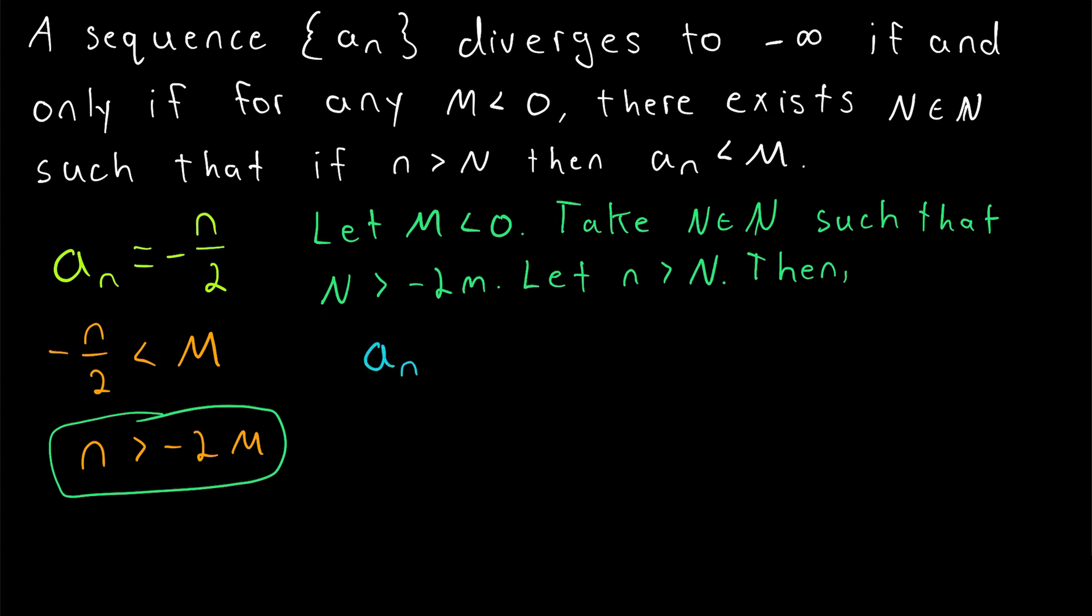So we have that our sequence a_n is equal to negative n over 2. Note that since M is a negative number, negative 2M is a positive number. So if we replace this n in the numerator, which is positive,